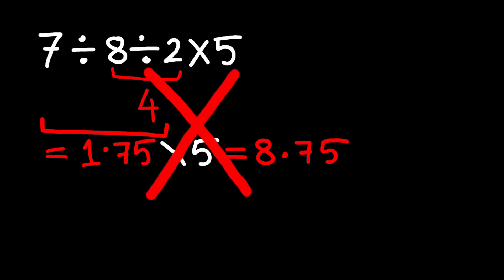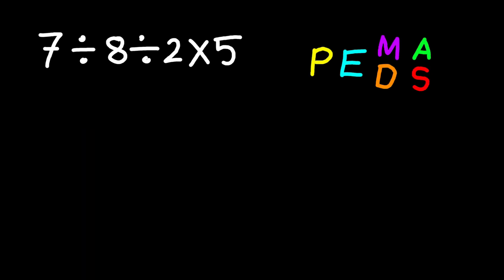We have to follow the order of operations, which is PEMDAS. P stands for parentheses, E stands for exponents, M and D stand for multiplication and division, and A and S stand for addition and subtraction.